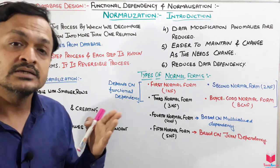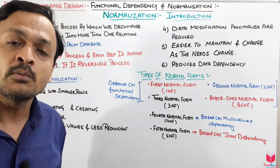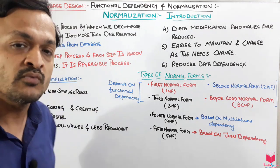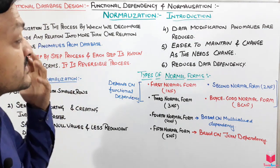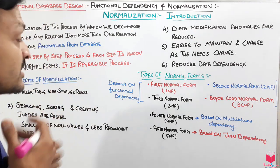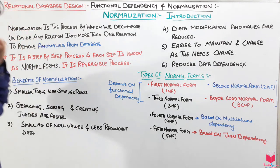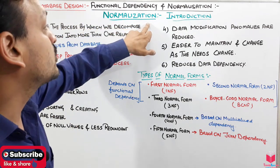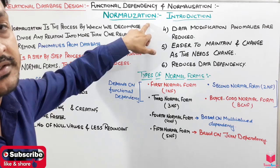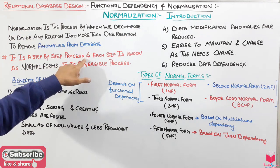Anomalies like insert anomalies, deletion anomalies, and updation anomalies — we want to remove those. We have seen the disadvantages of those anomalies, so to remove them we use the concept or process of normalization. It is a step-by-step process.